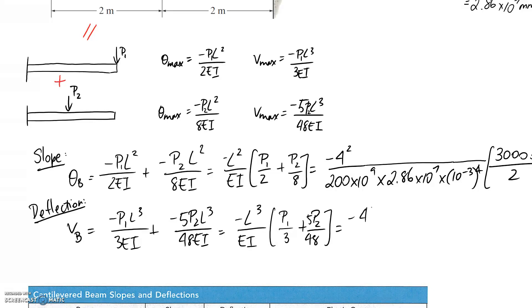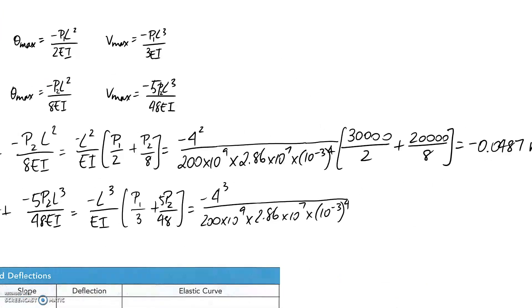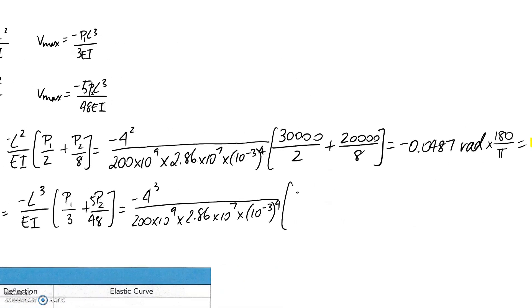Again putting things in, we get this. Remember P1 is 30,000 in newtons and P2 is 20,000.